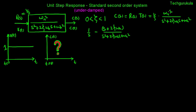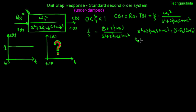To make it very specific to the underdamped case, let us find the roots of the denominator polynomial, also called the characteristic polynomial. s squared plus 2 zeta omega n s plus omega n squared can be written as s minus s1 times s minus s2, where s1 and s2 are given by minus zeta omega n plus or minus j omega d, where omega d is the damped oscillation frequency, which is omega n times the square root of 1 minus zeta squared.